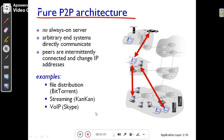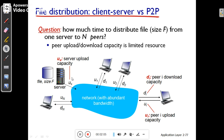In this session we will see file distribution using peer-to-peer architecture. We will consider the natural application of distributing a large file from a single server to a large number of hosts called peers. In client-server distribution, the server must send a copy of the file to each peer, placing a burden on the server and consuming a large amount of server bandwidth. We will consider a simple quantitative model for distributing a file to a fixed set of peers for both architecture types.